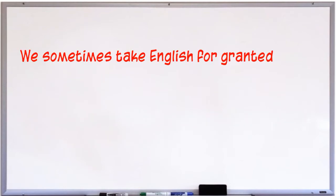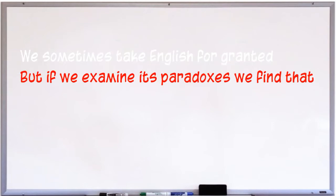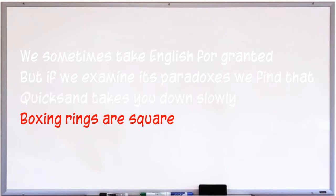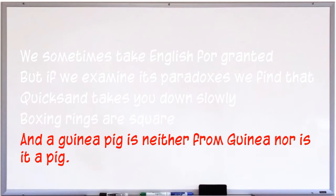We sometimes take English for granted. But if we examine its paradoxes, we find that quicksand takes you down slowly, boxing rings are square, and a guinea pig is neither from Guinea, nor is it a pig.